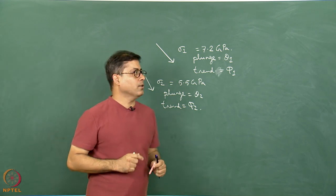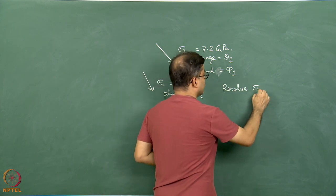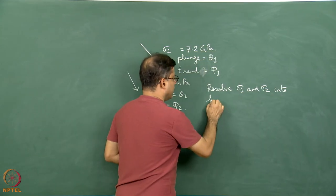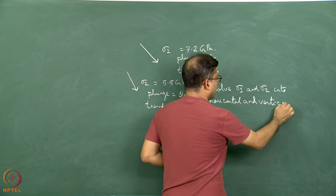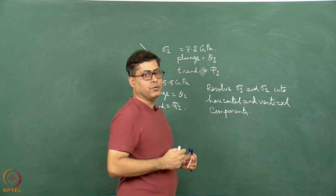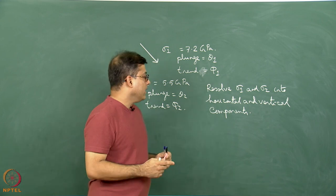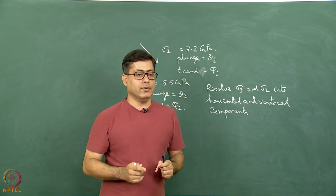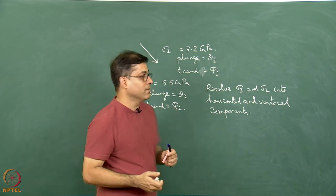In this process, we are going to resolve sigma 1 and sigma 2 into horizontal and vertical components. The two vertical components of sigma 1 and sigma 2 will be added up to get the resultant vertical component, and the two horizontal components will be added up to get the resultant horizontal component. From one resultant vertical component and one resultant horizontal component, we find the grand resultant sigma r.